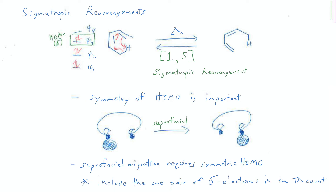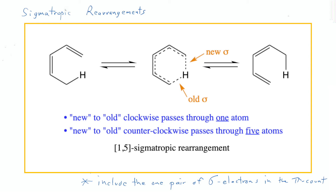Sigmatropic rearrangements have a naming convention that can describe a little bit about what's happening during the reaction. A sigmatropic rearrangement is going to result in breaking one sigma bond and then making a new sigma bond. What we need to do is find both of those sigma bonds, and then simply count how many atoms are in between those two bonds. Because the transition state is cyclic, there are actually two directions that we have to count the atoms. If we start with one sigma bond and go clockwise towards the next sigma bond, we pass through only one atom — the hydrogen. But if we go counterclockwise to get to the other sigma bond, we would have to go through five atoms. So this is known as a 1,5-sigmatropic rearrangement. The numbers are separated by a comma, and conventionally you put the lower number first. We'll take a look at how to use this naming convention on some other reactions a little bit later.